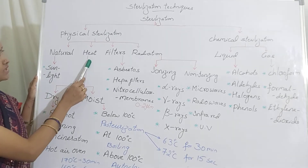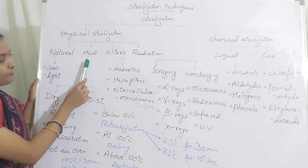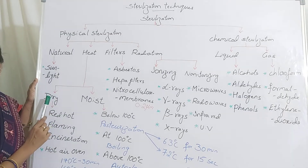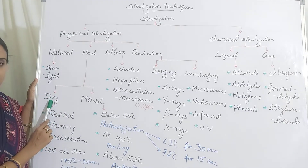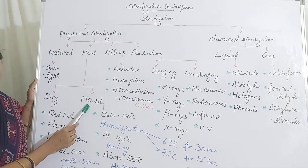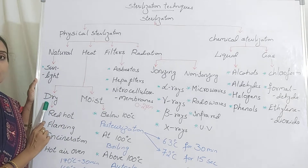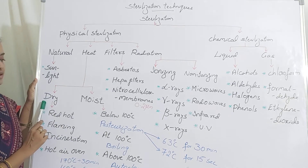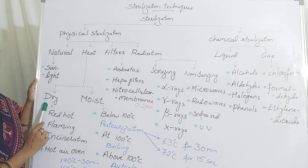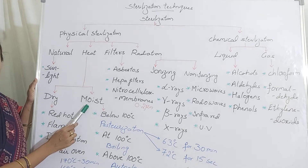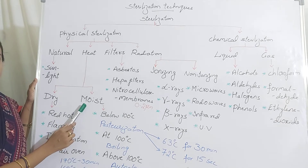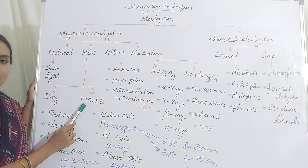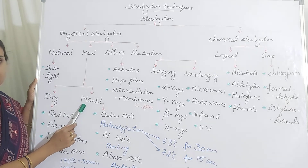The second type is heat sterilization, where heat can be either dry heat or moist heat. If you are making use of dry heat, we call this technique dry heat sterilization. If you are making use of moist heat, we call it moist heat sterilization or steam sterilization technique.